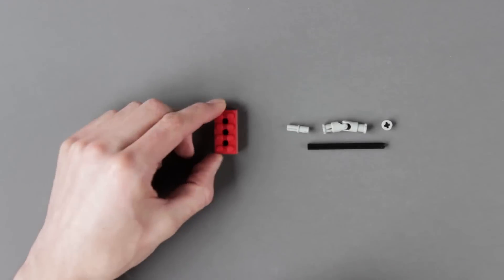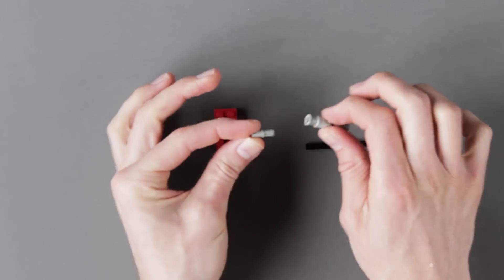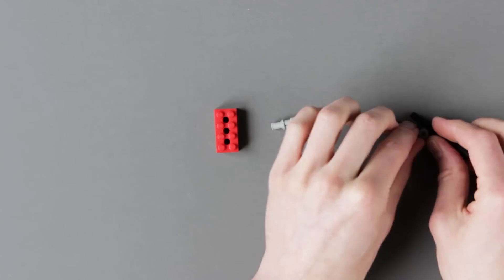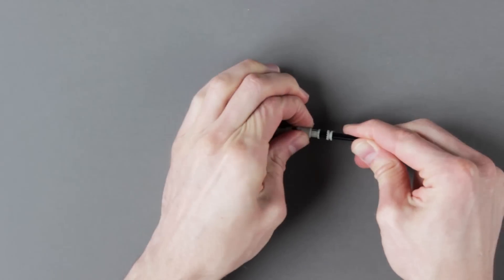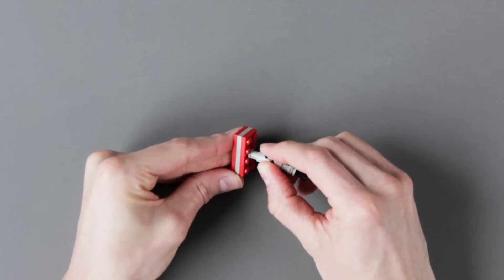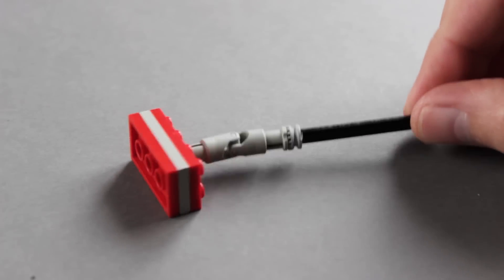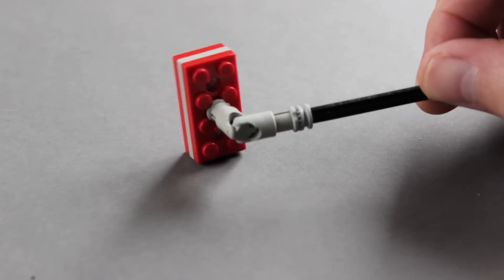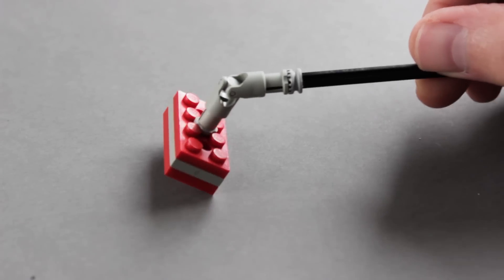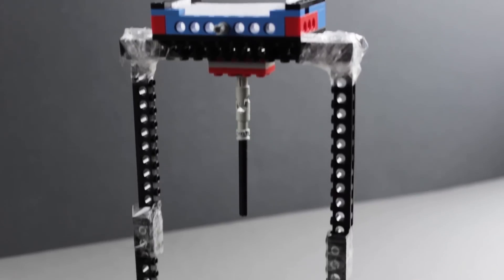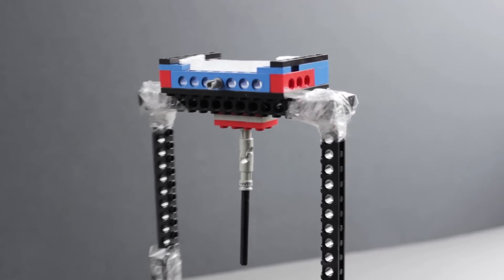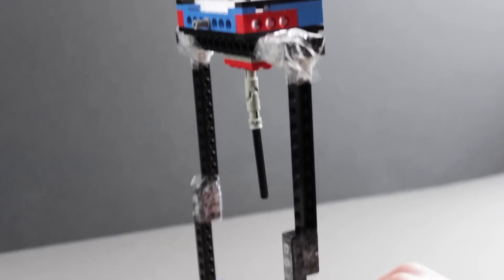I use three 2x4 plates with holes in, joined together to fix the Technic 3L joint, and I attach this to the underside of the balancing arms. Your arms, cross braces and holder should be fixed in the positions you see here, to make balance easier.